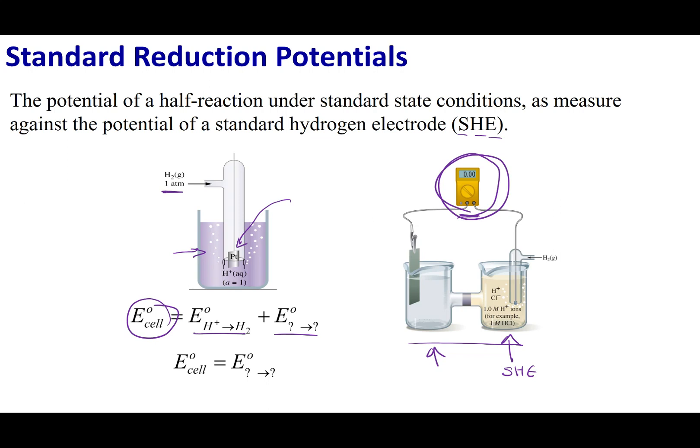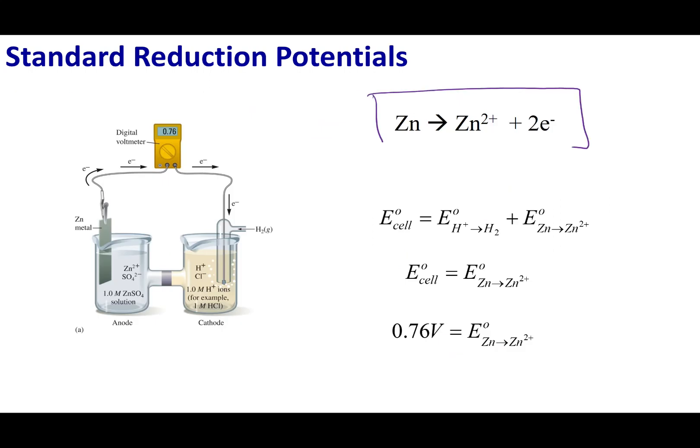Now, if I arbitrarily say that this hydrogen electrode is zero potential, then the cell is going to actually measure the potential of whatever I'm trying to analyze. So let's say I want to measure the potential of zinc going to zinc 2+ plus 2 electrons.